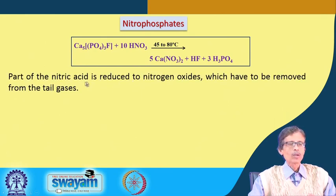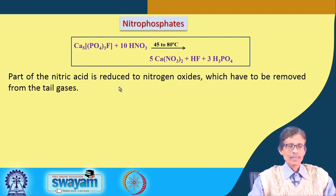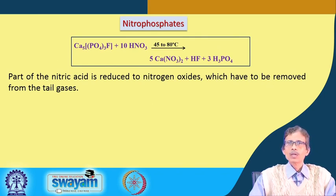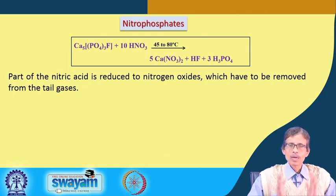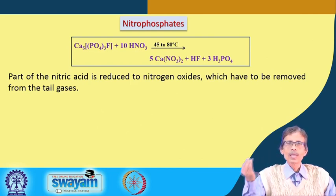One disadvantage of this process is that part of the nitric acid is reduced to nitrogen oxides, so not all nitrate reacts with calcium ions to produce calcium nitrate. The reduced nitrogen gases must be removed from the tail gases. Any gaseous byproducts accumulate in the reaction chamber or reactor and must be removed from the top as tail gas.